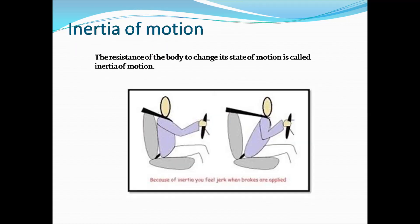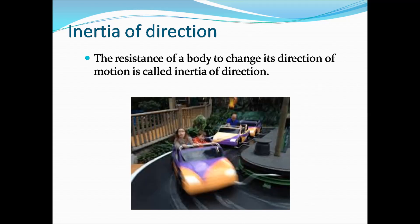Next is inertia of motion — the object is in motion and does not want to change its state of motion. For example, when we are traveling in a car and a sudden brake is applied, we move forward or feel a jerk. This is due to inertia of motion.